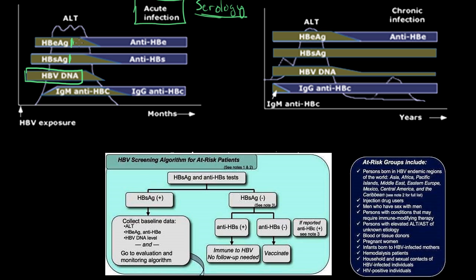In time, in an acute infection, that DNA goes away as the body's immune system fights it. Your surface antigen becomes replaced with antibodies to the hepatitis B surface antigen, and your E antigen also becomes replaced with antibodies to E. Eventually the DNA is completely gone, and the only thing you're left with is the antibody to your hepatitis B surface antigen. Your surface antigen will be completely gone once the infection clears.